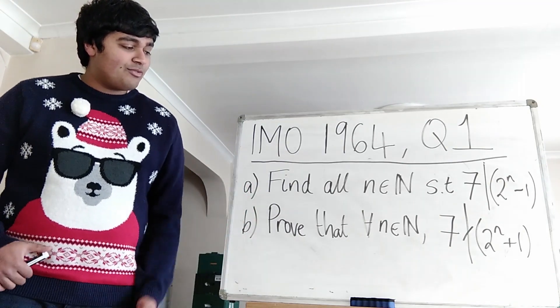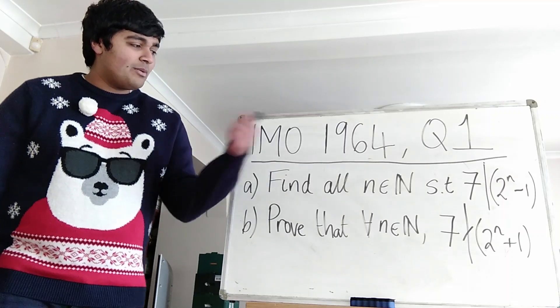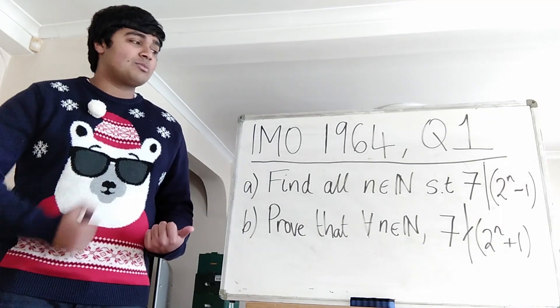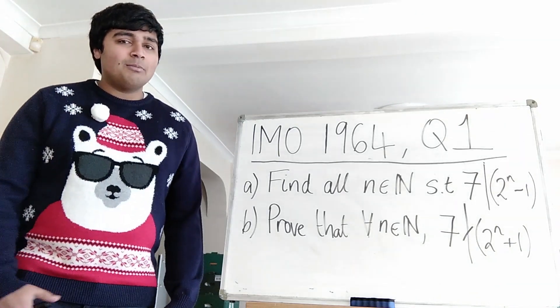And part B: Prove that for any natural number n, 7 never divides 2 to the n plus 1. So the first part, we want to find natural numbers n such that 2 to the n minus 1 is a multiple of 7. And B, we want to prove that 2 to the n plus 1 is never a multiple of 7.